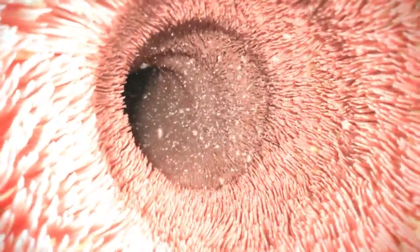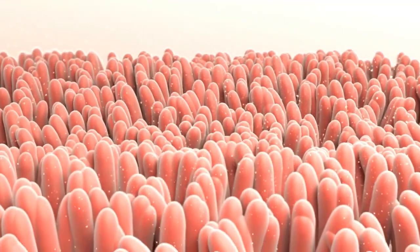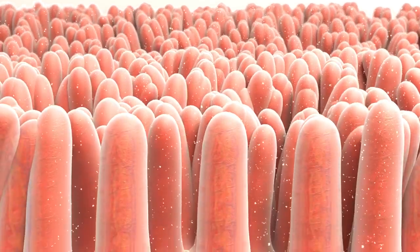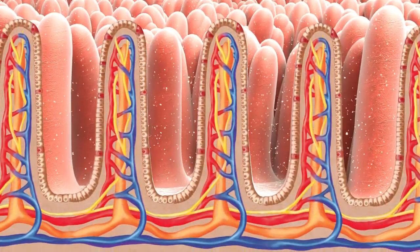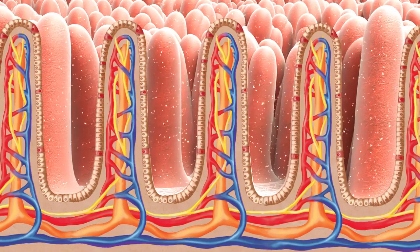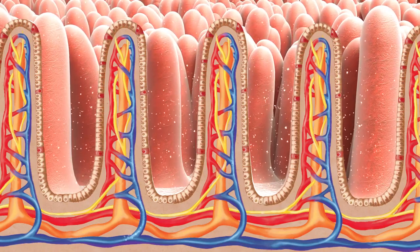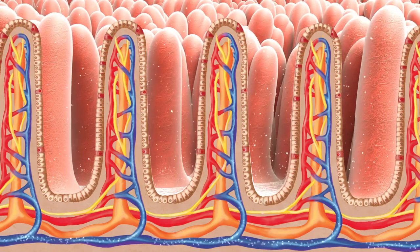The small intestine walls, also called the lumen, are lined with tiny villi which stick out to provide a large surface area for the nutrients inside the food to be absorbed. Looking closer at these villi, you can see they have a rich blood supply and they are covered in a thin layer of epithelial cells.